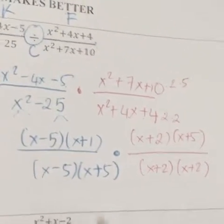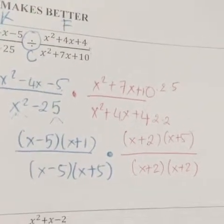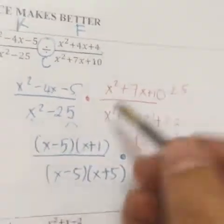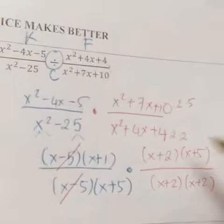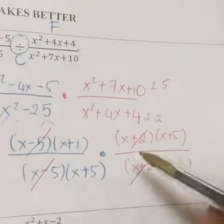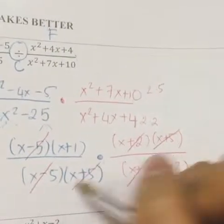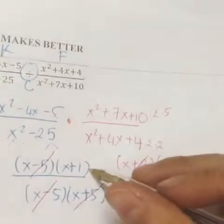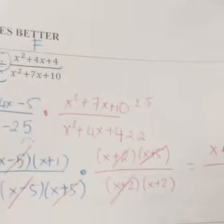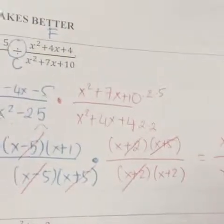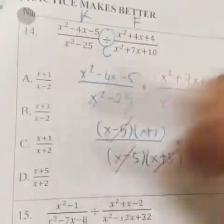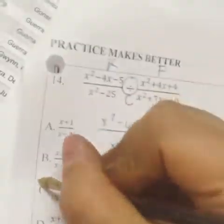Now let's look at the top and bottom and see what we can cancel. We have x minus 5 and x minus 5 — cancel. We have x plus 2 and x plus 2 — cancel. We have x plus 5 and x plus 5 — that's 1. Whatever is left over is our answer: x plus 1 on top and x plus 2 on the bottom. Looking at the answer choices, our answer is x plus 1 over x plus 2 — that's answer choice C.